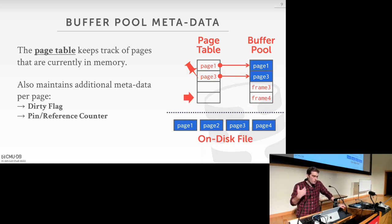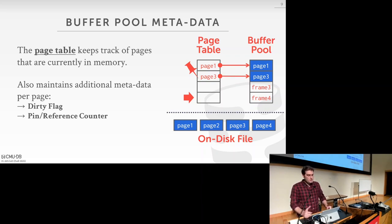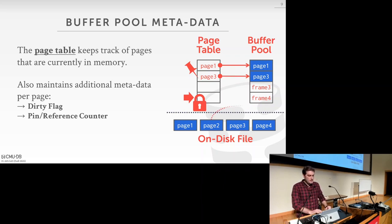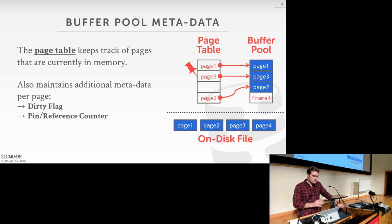If we have multiple concurrently running queries, one might come along wanting to fetch another page from disk into memory, causing concurrency issues where multiple threads try to modify the page table simultaneously. To handle this, a thread sets a latch on a position in the page table to prevent concurrent modifications, then requests the page to be loaded in. Once page two is loaded and the mapping is added to the page table, the thread can release its latch.